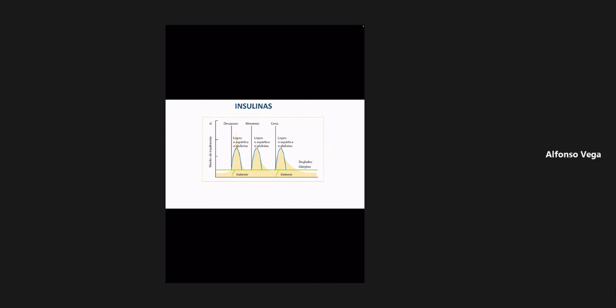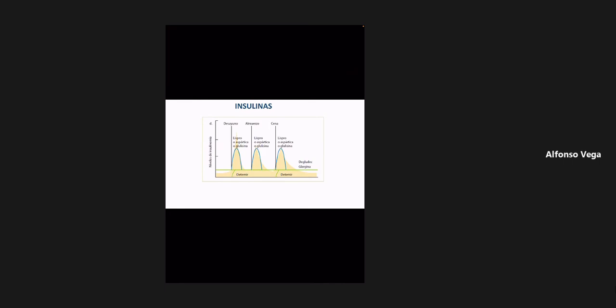En la punta de cada uno de esos tres incrementos se encuentran los nombres de las insulinas de acción corta que vimos: la lispro, la aspartato, la glulicina. Lo que les había comentado anteriormente es que una tendencia es tratar de mimetizar la secreción de insulina, tanto basal para evitar la gluconeogénesis, como la insulina rápida o de acción corta, que tiene por objeto manejar los picos de glucosa.